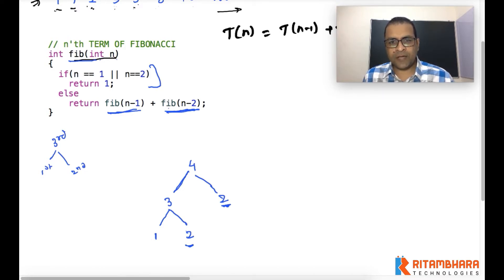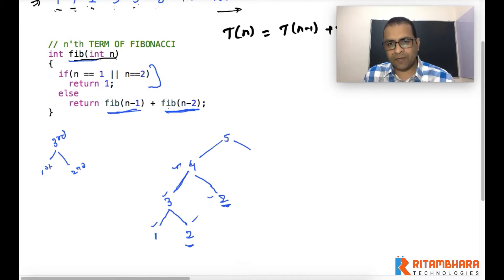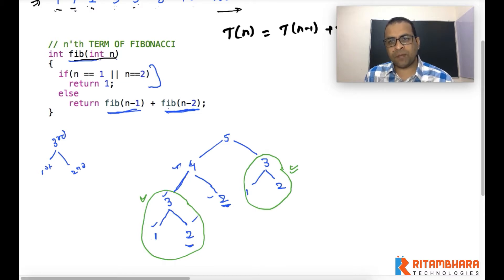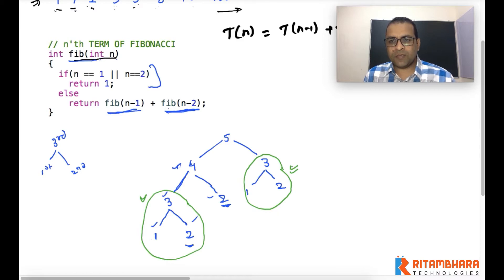For the fifth term, with n=5, we call the function for n=4 and n=3. Computing the fourth term results in several nested calls, and then we again compute the third term of Fibonacci, calling the function for n=1 and n=2. So the third term is computed twice — these three function calls are exactly the same as those three function calls. If we had stored the result of the third term, we could have reused it instead of recomputing.